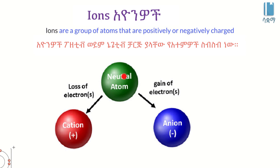Ion is positive charge, not negative. A neutral atom loses electrons. When an atom loses its valence electrons, positively charged ions are formed — these are called cations.